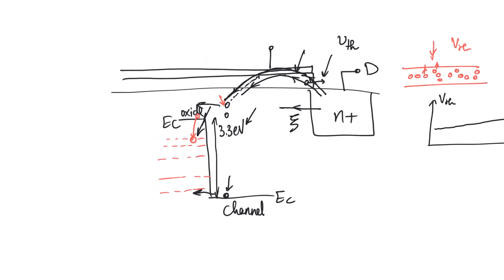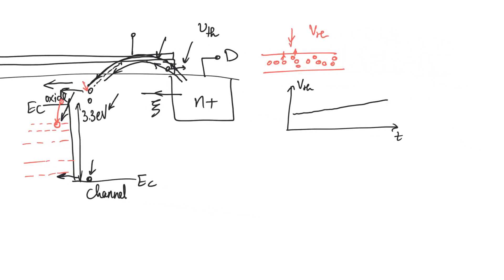It's important to understand that the hot carrier effect is completely different and totally independent from tunneling. The hot carrier effect can be understood fully from the band model — it involves no quantum physics, no Heisenberg uncertainty principle. The electrons actually travel through the oxide physically. In tunneling, electrons don't actually move through the oxide; they appear on the other side. These are totally different effects, independent of each other, and not affected by the same factors.